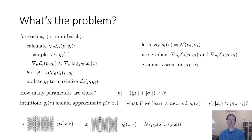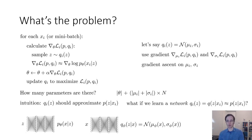To recap what we had before, our variational inference procedure for training the model parameters theta looks something like this. For every image X_i or data point X_i in our dataset, or more generally for every mini-batch, you estimate the gradient with respect to theta of your variational lower bound L_i(P, Q). You do this by sampling a Z from the approximate posterior Q_i of Z, then estimating the gradient as the gradient with respect to theta of log P_theta of X_i given Z. Then you take a gradient step using this estimated gradient, and then you update Q_i to maximize the bound L_i and thereby tighten it.